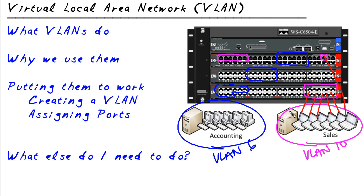The server we'll put up there, and the accounting devices get plugged into the blue ports, and the server into a blue port. That's why they call it a virtual local area network — because we have one physical switch, but we're carving it into different chunks. So virtually, logically, we're keeping all the accounting traffic and the sales traffic completely separate from each other.